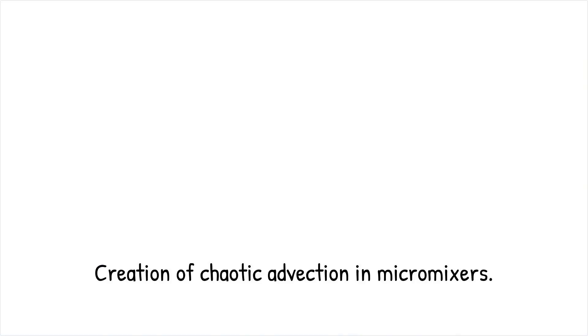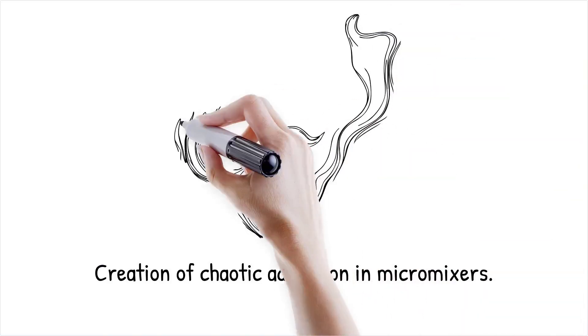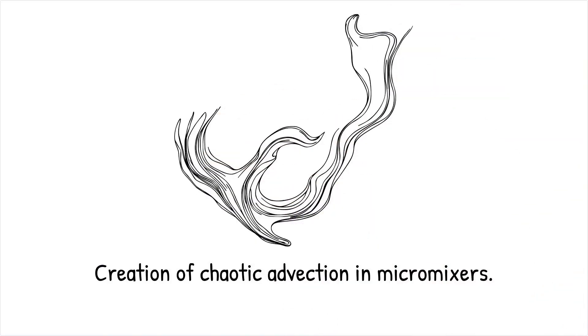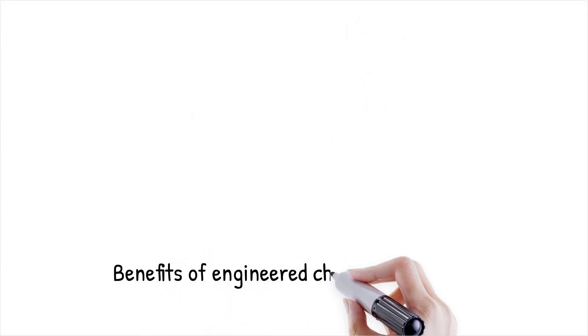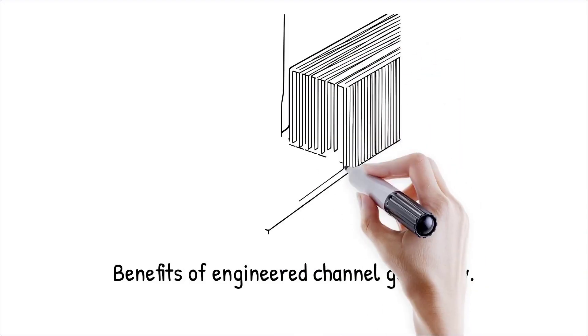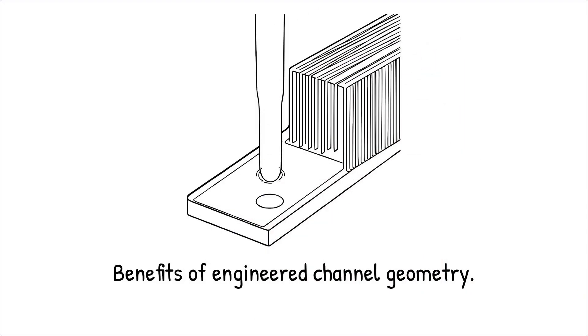Passive micromixers use microchannel designs such as serpentine, herringbone, or staggered structures to enhance mixing without external energy input. These designs create chaotic advection, which stretches and folds fluid streams, increasing interfacial contact and promoting faster diffusion. By strategically engineering channel geometry, researchers can achieve rapid and uniform mixing while maintaining a compact design.